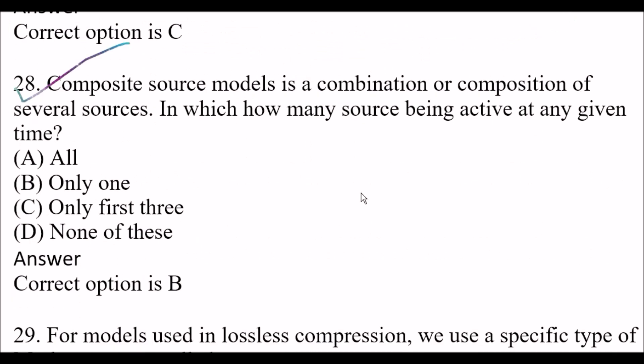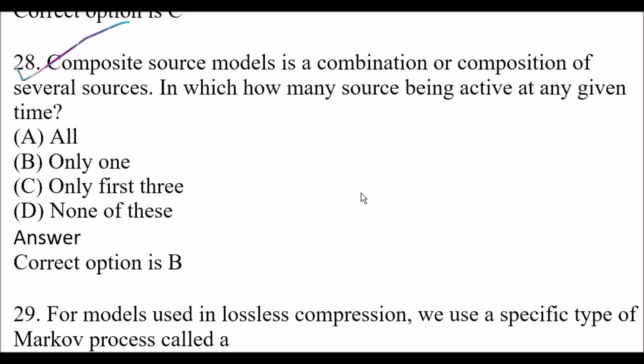Next question: A composite source model is a combination or composition of several sources in which how many sources are active at any given time? Option A: all. Option B: only one. Option C: only first three. Option D: none of these. The right answer is only one. A composite source model is a combination of several sources in which only one source is active at any given time.